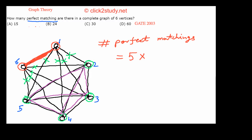From this remaining K4, we pick vertex 2 and choose an edge incident on it. The eliminated edges are gone, so we can choose from three remaining edges. By the product rule, this contributes a factor of 3.